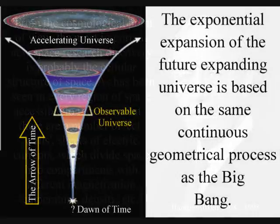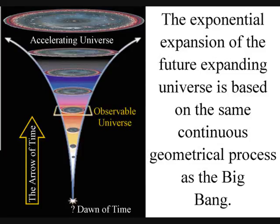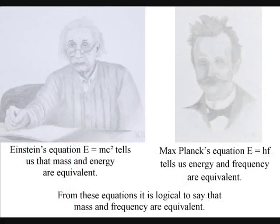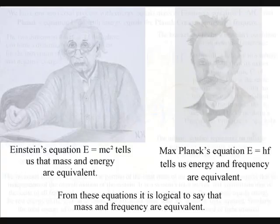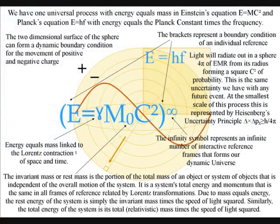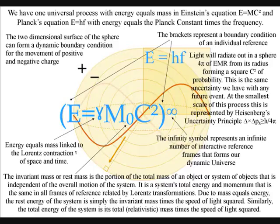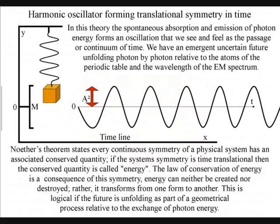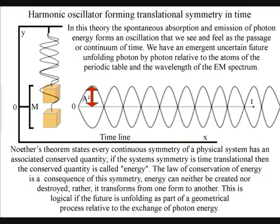When I use the word equivalent, I mean based on the same continuous geometrical process. This can be explained by using Einstein's equation that tells us that mass and energy are equivalent, and Max Planck's equation that tells us energy and frequency are equivalent. From these equations, it is logical to say that mass and frequency are equivalent. Therefore, any stable particle which has mass is a clock with a frequency oscillation that can be measured as a period of time.